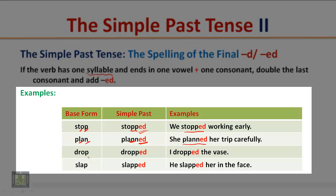Continuing with Rule 3: 'Drop' has one syllable, ends in one vowel and a consonant — double the consonant and add ED: I dropped the vase. 'Slap' has one syllable, ends in one vowel and a consonant — double the consonant and add ED: he slapped her in the face.